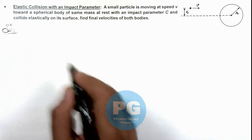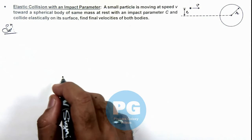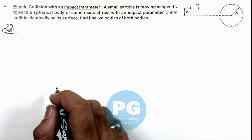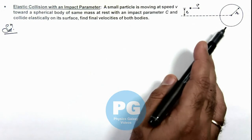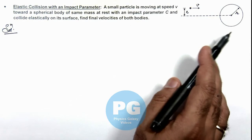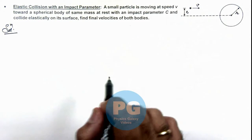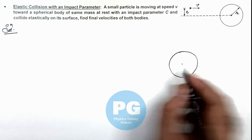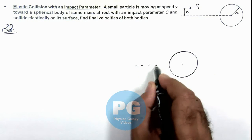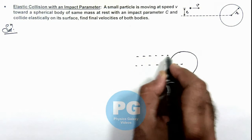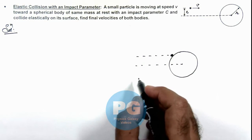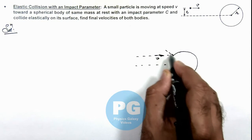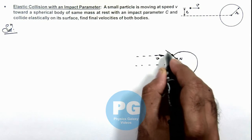Since the collision is elastic, we can conserve both energy and linear momentum in the plane where the two bodies are colliding. The spherical body is placed on a smooth horizontal surface and we are looking at it from the top view. At the time of collision, the normal reaction acts along the radial direction.